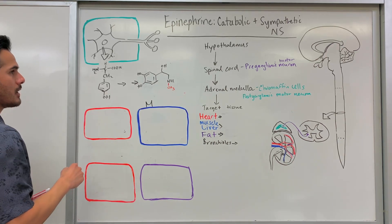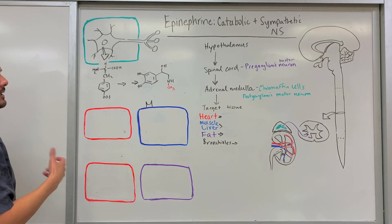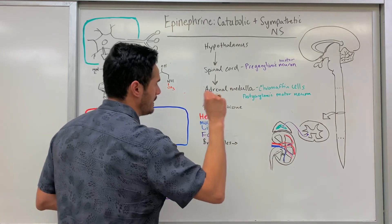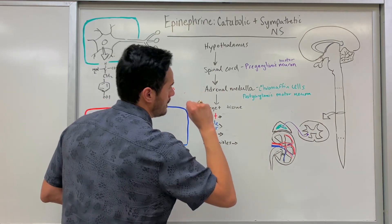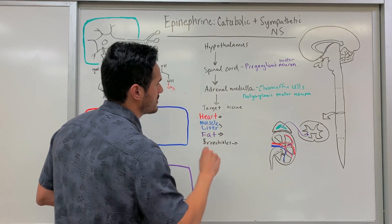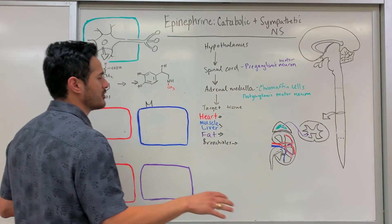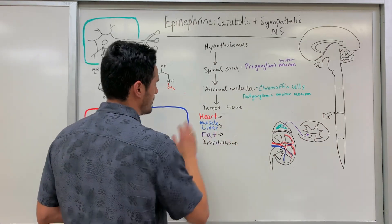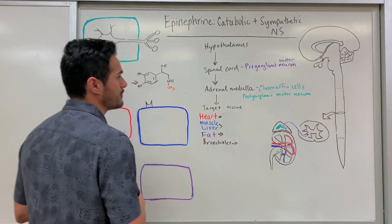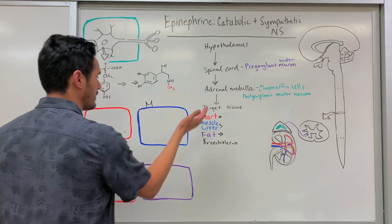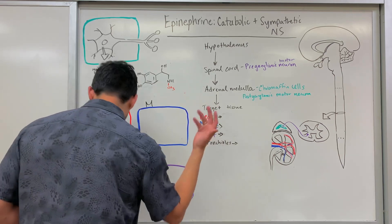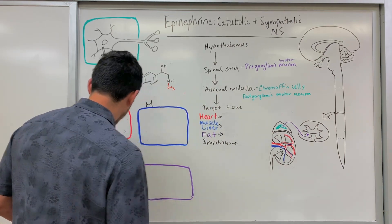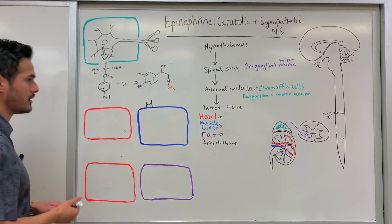Once we get the signal and epinephrine or norepinephrine is released from the adrenal medulla, it gets into the blood and travels to its target tissue. The different target tissues include the heart, muscle, liver, fat, and also the bronchioles.